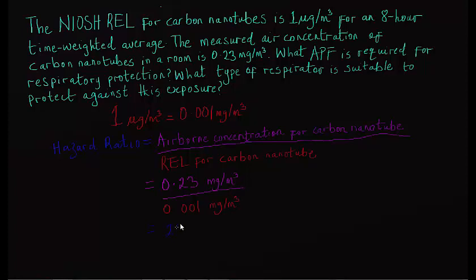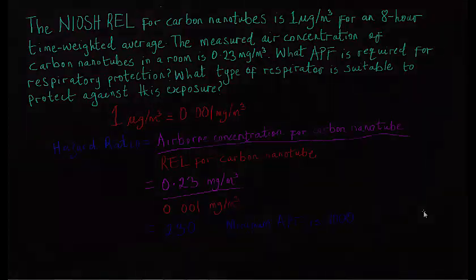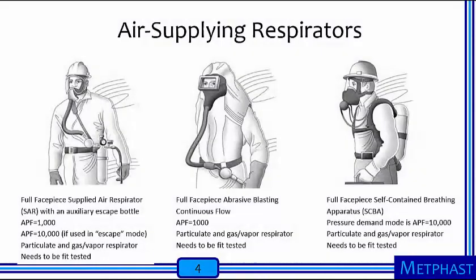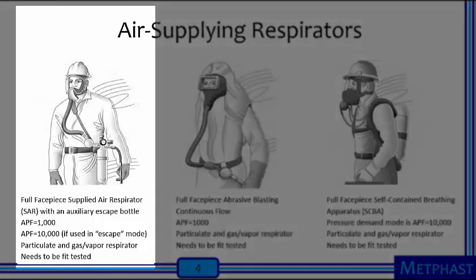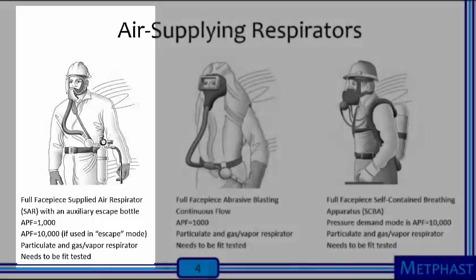For a hazard ratio of 230, the minimum APF is 1000. A suitable respirator against this exposure is the full face-piece supplied air respirator with an auxiliary escape bottle.